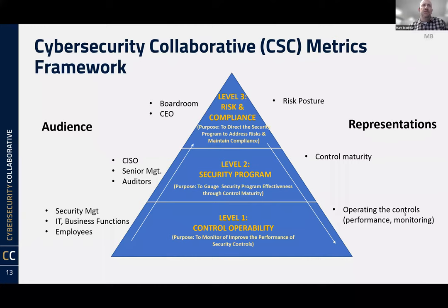Mark: This slide is a visualization of how to align your metrics reporting with your audience. At Level 1, the metrics are operational and performance-focused and your audience is cybersecurity management or a business function. As you move up the pyramid to Level 2, metrics should focus on measuring the effectiveness of your program, aligned with your CISO or senior management. At Level 3, your audience is the C-level boardroom and metrics should be focused on addressing risk and maintaining compliance. The key takeaway: know your audience and align those metrics with their needs.